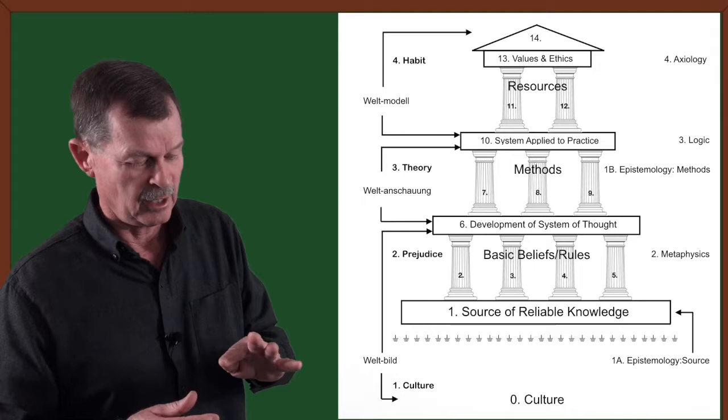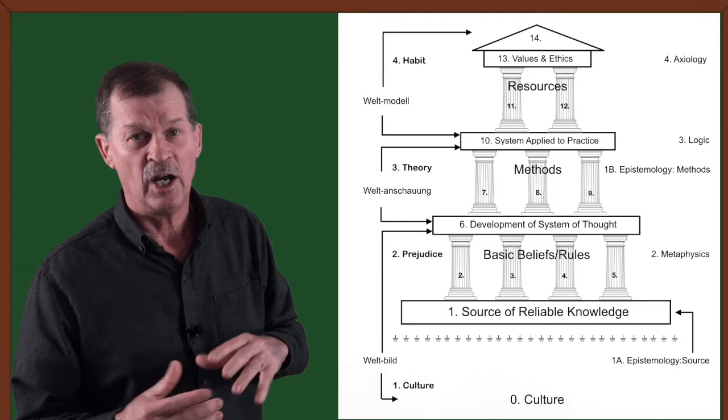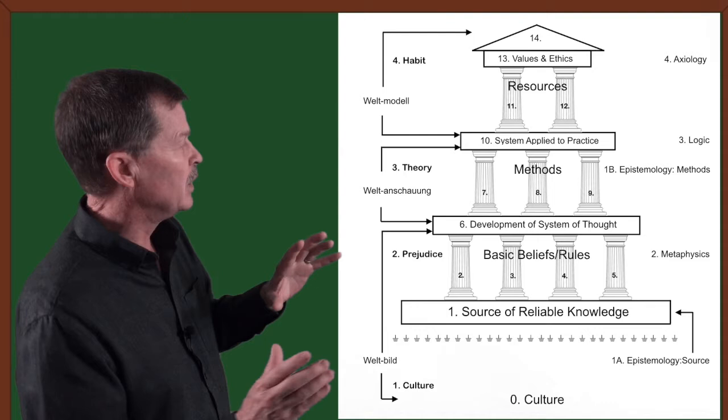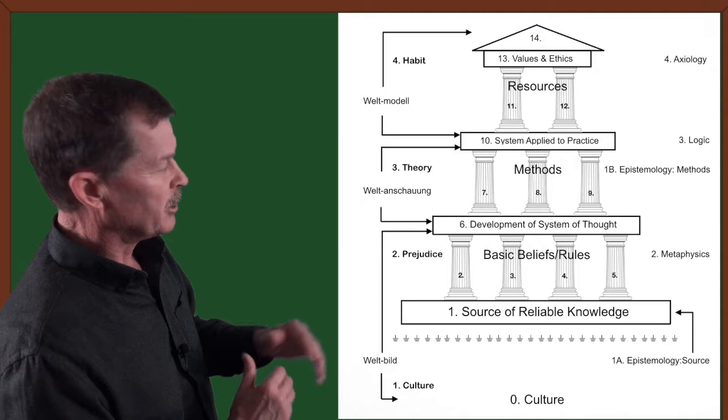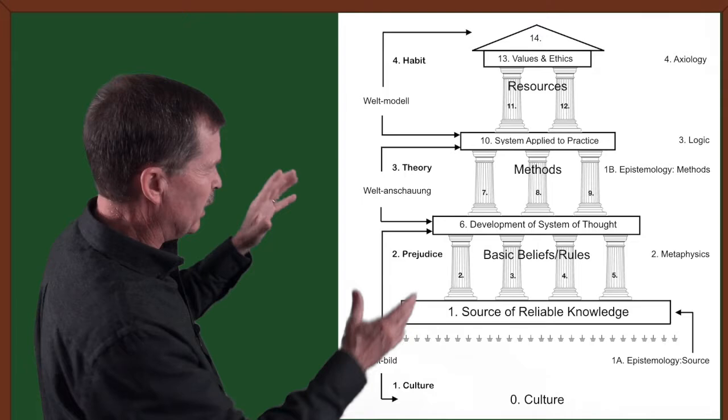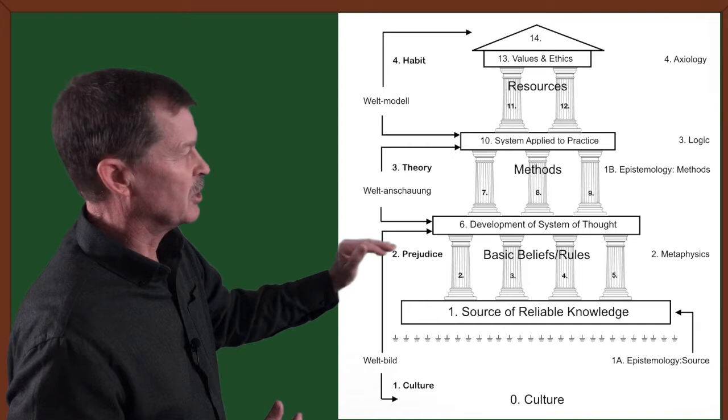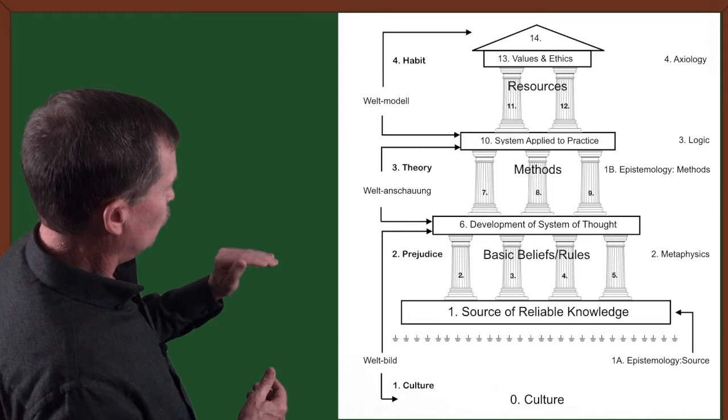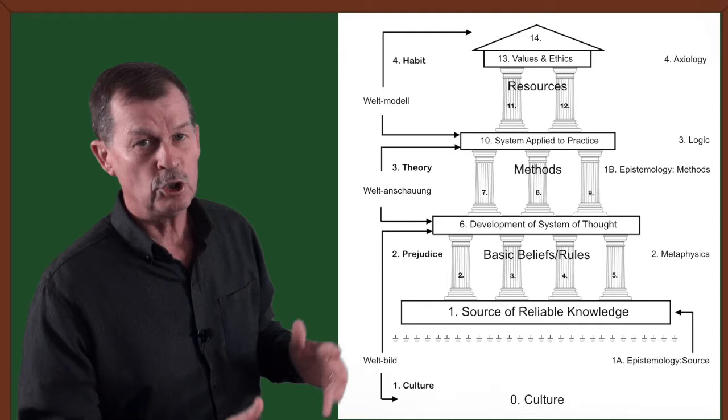I've put together a diagram of a house that includes three different concepts or three different sets of ideas that I'm going to be going over in this series. Culture at the bottom undergirds the foundation. The house has a foundation, but under that foundation, there are tendencies of thinking patterns, and that is the culture. On the left-hand side of the house, we see Weltbild, Weltanschauung, and Weltmodel.